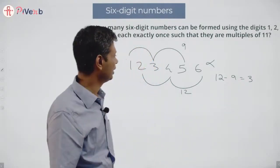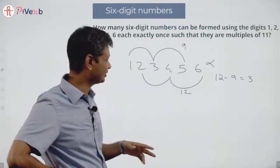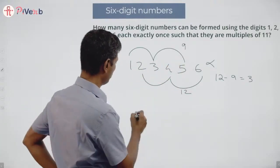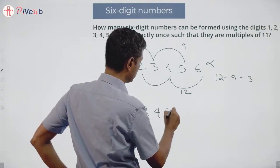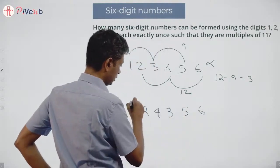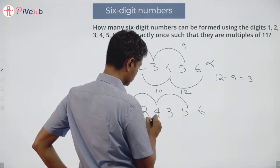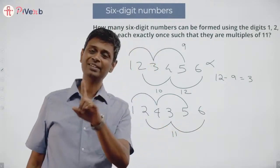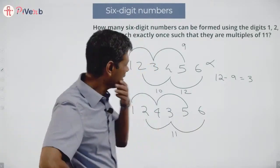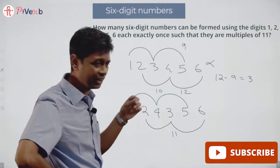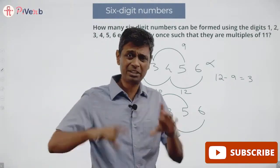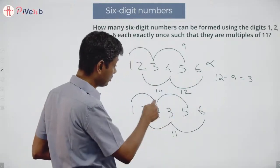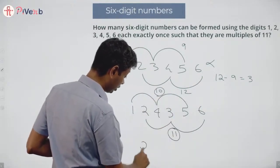I want the difference to be zero — I'll try to balance this out. Let me try 1, 2, 4, 3, 5, 6: 1 plus 4 plus 5 is 10, 2 plus 3 plus 6 is 11. 11 minus 10 is 1 — I'm still not getting zero. Now I'm thinking about what method will get me here. I want the difference to be zero. Let me add all the digits: the sum of all six digits is 21.